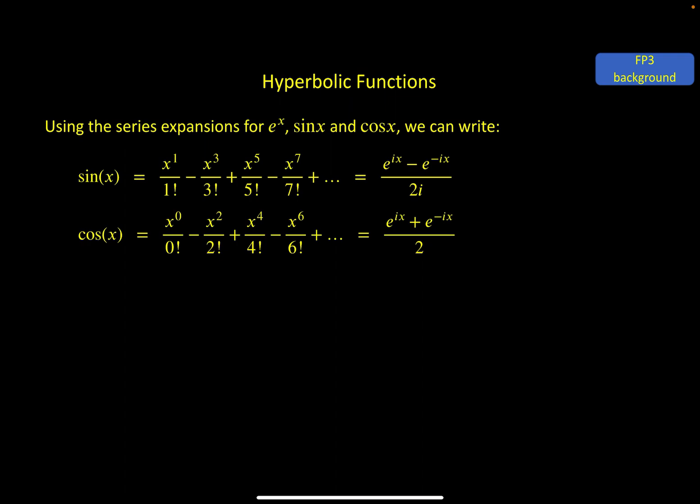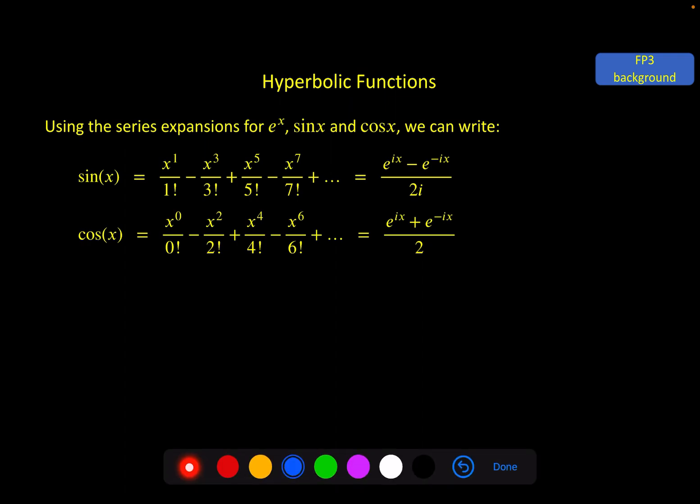So to try and emphasize that, I've got the definitions here of sine and cosine, the trig functions, using the series expansion for these different things. You can write sine x in this way with a series expansion and in this way in an exponential form. Same with cosine x you get this. Now what makes these very different from the hyperbolic functions is the imaginary element here.